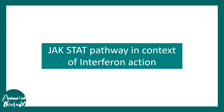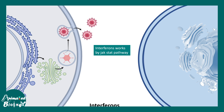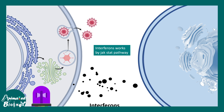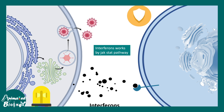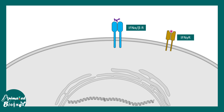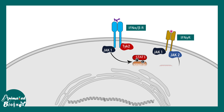Now let's discuss the JAK-STAT pathway in the context of interferon signaling. Interferons are alarm molecules secreted by virally infected cells. These interferons are detected by specific receptors on neighboring cells, giving those cells time and the necessary proteins to counter a viral attack. Interferon receptor alpha, beta, and gamma bind specific interferons and activate JAK-STAT signaling, with specific JAKs downstream of each receptor.